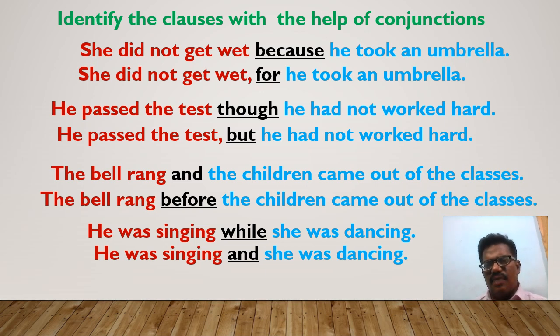And if a clause has a coordinating conjunction before it, that clause is called a main clause. You have seen how the clauses are affected by the conjunctions. If a clause has a subordinating conjunction before it, it is called a subordinate clause. If the same clause has a coordinating conjunction before it, it is called a main clause. In this way, the clauses are affected by — or influenced by — the conjunctions.